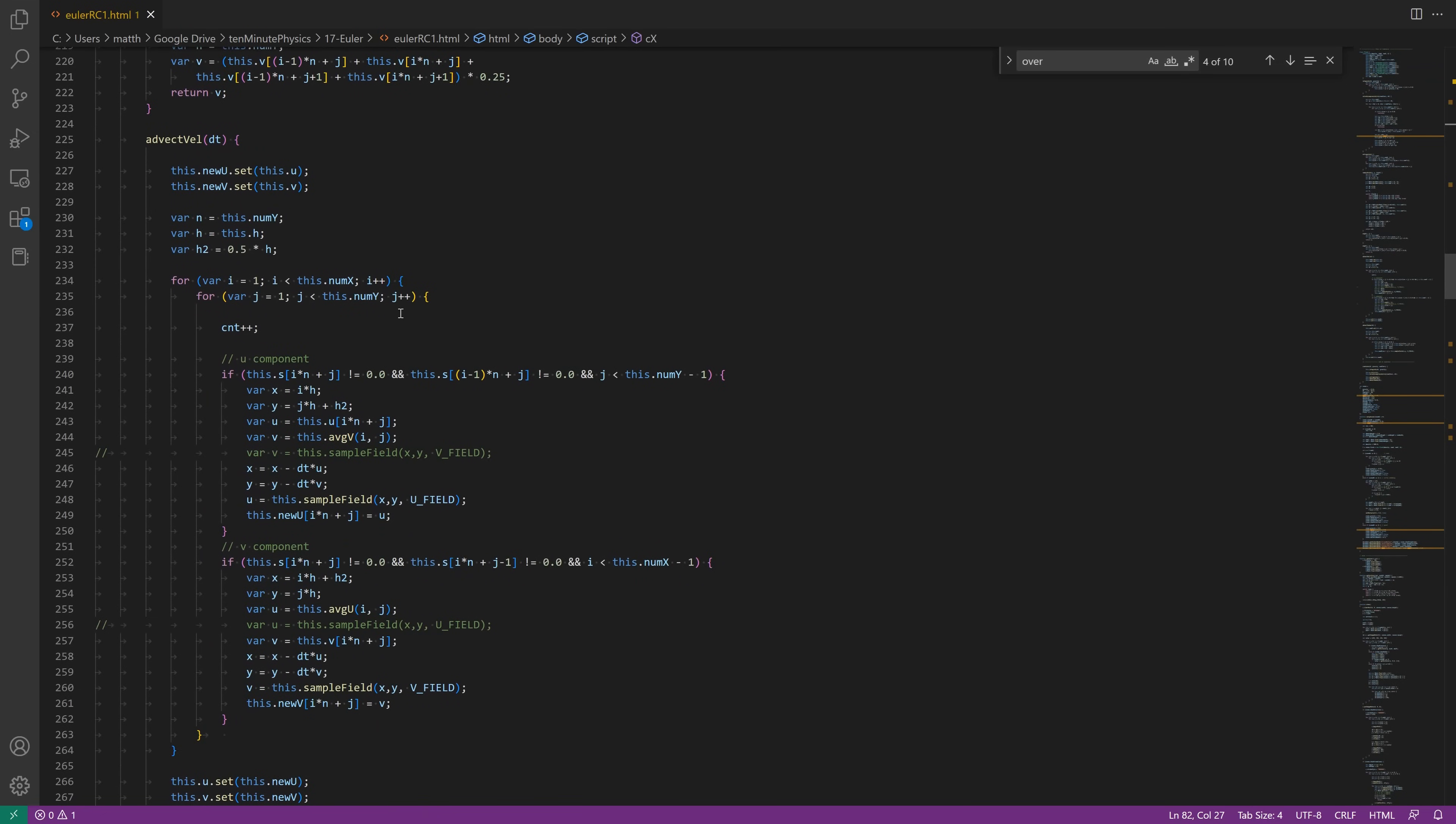This is the advection method. Here I run through all the cells and update the U and the V component of the velocity field. To do this, I first compute the velocity at the location where U is stored. Then I perform the backward step and sample the field at this new location. The same for the V component.